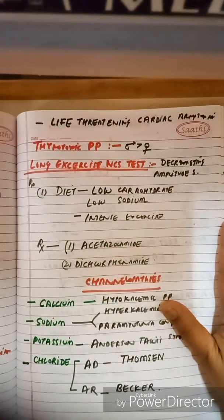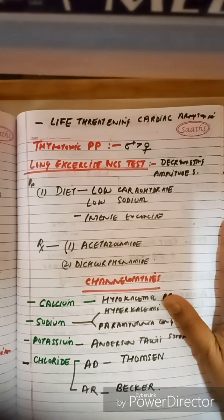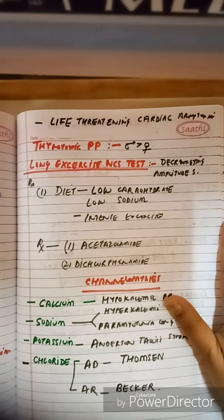How will you diagnose a patient? First, use the clinical scenario. Then confirm with potassium levels — sometimes potassium can be normal. Get a nerve conduction test done: after long exercise, nerve conduction will show decremental amplitude of CMAPs. For treatment: patients should be cautioned about high carbohydrate and high sodium diet — they should take a low carbohydrate, low sodium diet and avoid intense exercise. Treatment includes acetazolamide and dichlorphenamide.